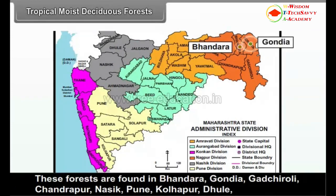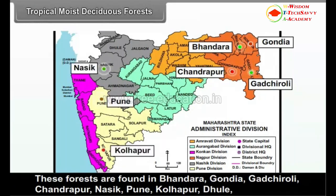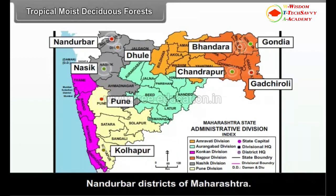These forests are found in Bhandara, Gondia, Gadchiroli, Chandrapur, Nasik, Pune, Kolhapur, Dhule and Nandurbar districts of Maharashtra.